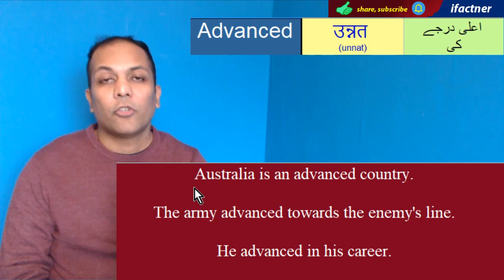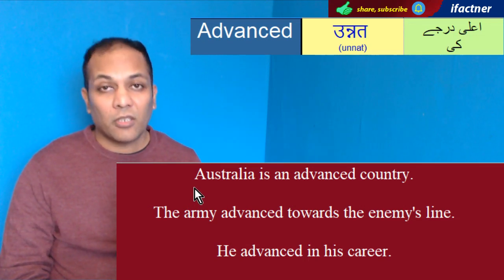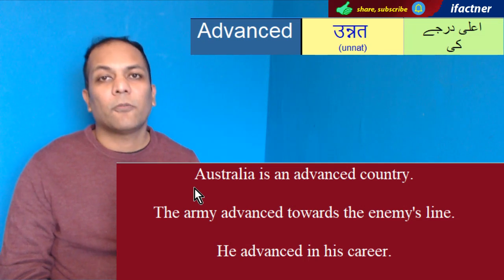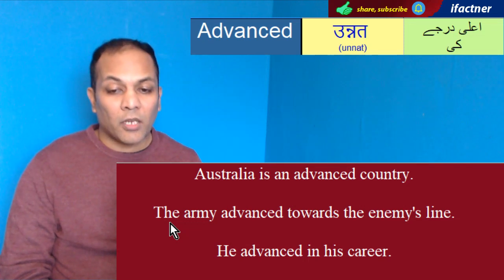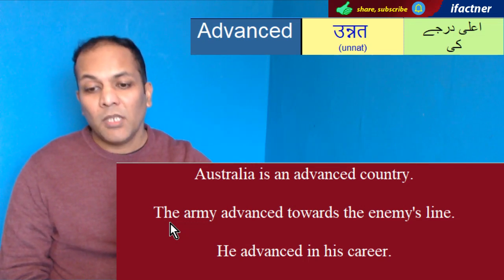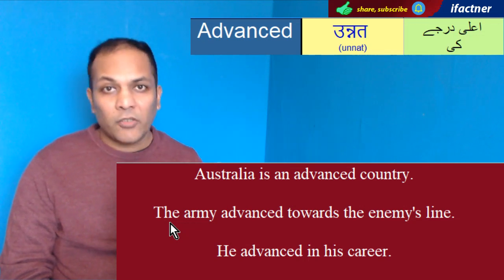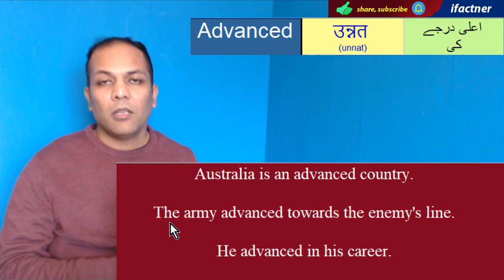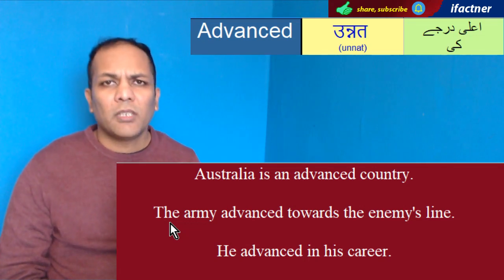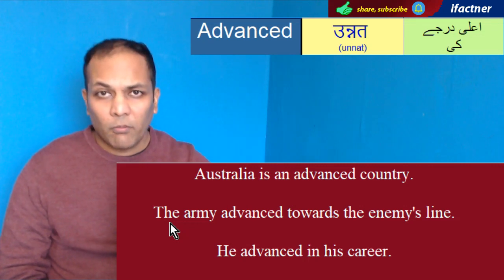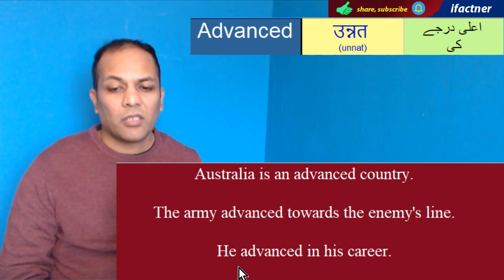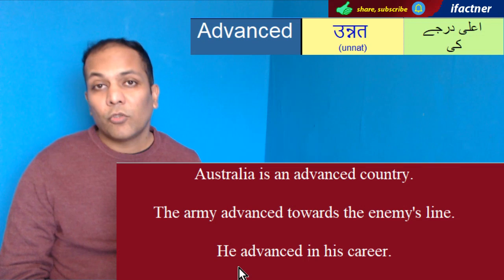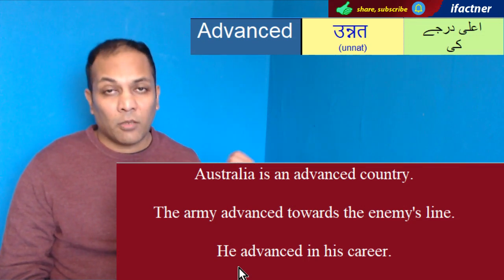Example: 'Australia is an advanced country.' — Australia aik tarakki yafta desh hai, mulk hai. 'The army advanced towards the enemy's line.' — Ab yahan past tense mein advanced ko use karein: army jo hai woh dushman ki lines ki taraf badhi. 'He advanced in his career.' — Yaani ke us ki tarakki ho gayi. Pehle woh assistant manager tha, manager ban gaya.